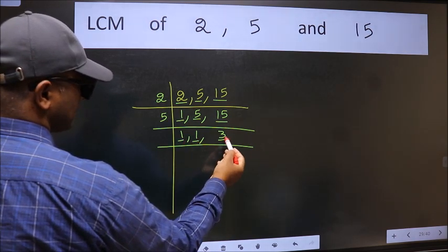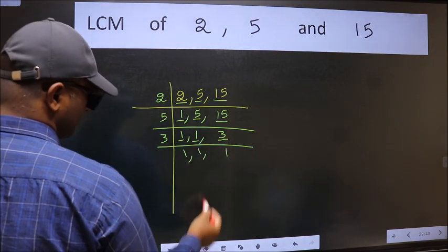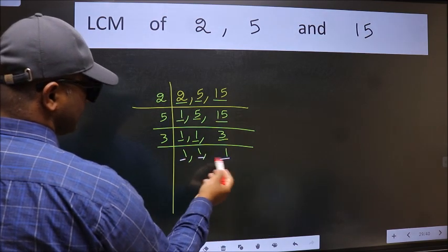So focus on the next number 3. 3 is a prime number so 3 once 3. So we got 1 in all the 3 places.